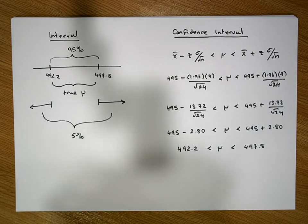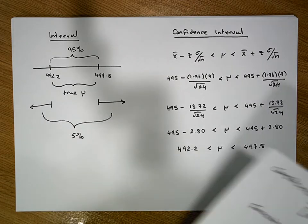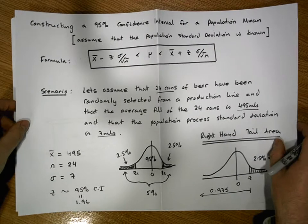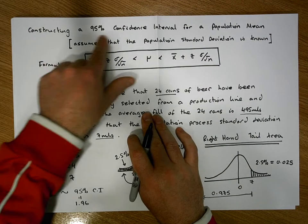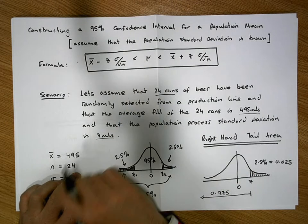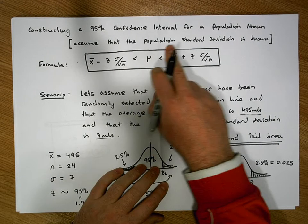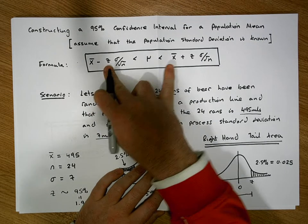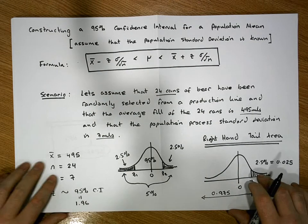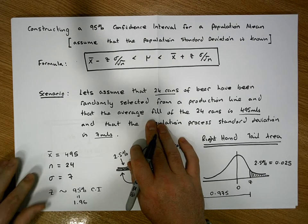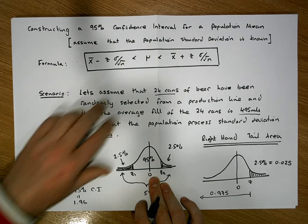Once again, this was Jonathan Lambert with the Mathematics Development and Support Service at the National College of Ireland. This video was detailing how to construct a 95% confidence interval for a population mean, assuming that the population standard deviation is known, in which case we rely upon a Z distribution. I hope this video was somewhat intuitive and helpful. Thank you for your time. Bye bye.